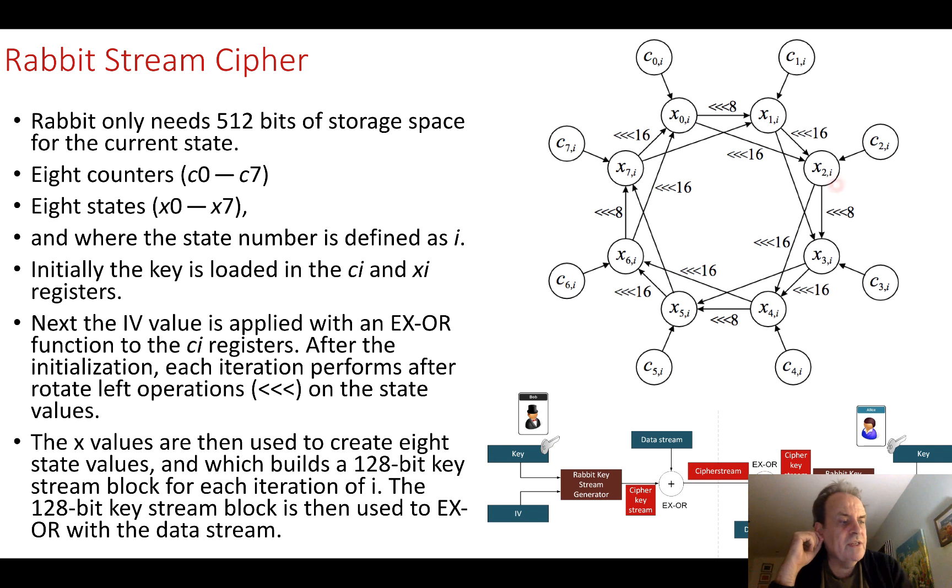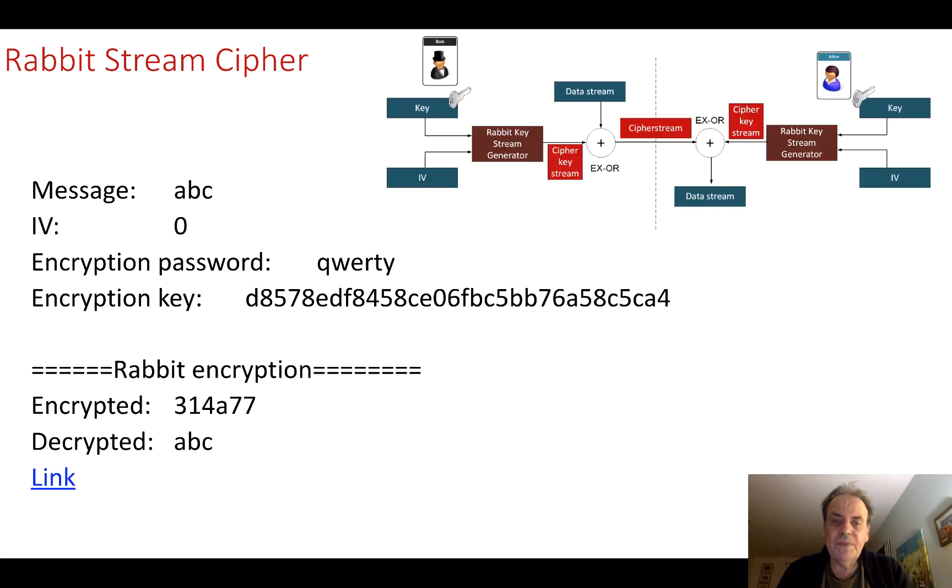We have eight counters and eight states. These are loaded up with the key initially. We then take the IV value and then load that up with an XOR function into the counters, and we're all ready to go. Then what we do is we increment through the states with the shifts that are involved here. In this case, we take the state and we move it 16 places to the left—the bits fall out and go on the other end, and that goes into there. It's a quite dynamic relationship that we have here. But the states, the values that we have here, are then used to create the key. As I said, that key is then XOR'd with the data stream.